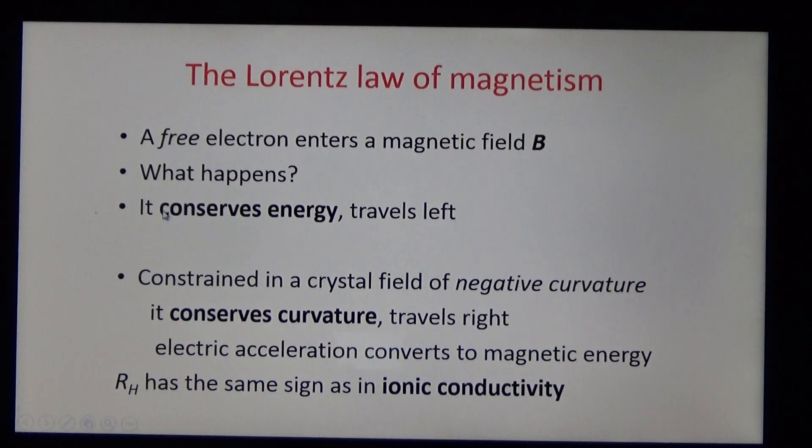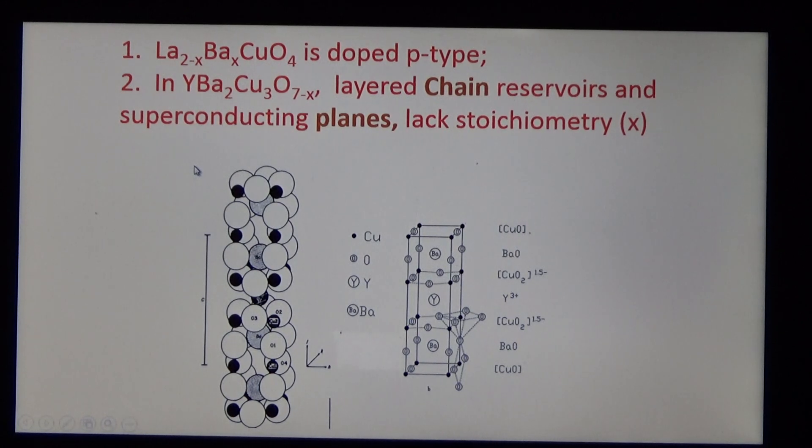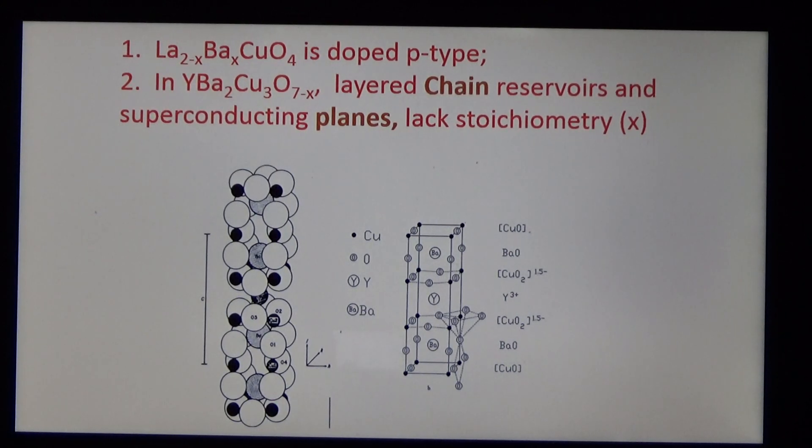What about the superconductors themselves? We'll consider the cuprates because they're the best known and because they have the highest critical temperatures as a group. And the first that was discovered was barium doped lanthanum cuprate, barium as divalent and lanthanum as trivalent. This is a p-type superconductor, like the p-type semiconductor.